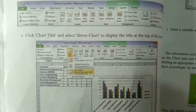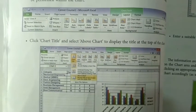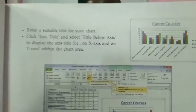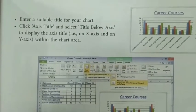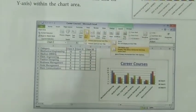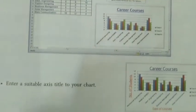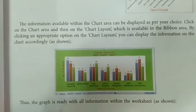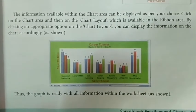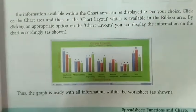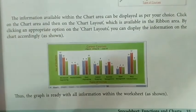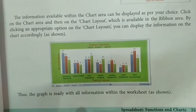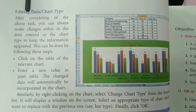After selecting the column graph, you can make further changes. To add information, click Chart Title and select 'Above Chart' to display the title at the top. Different chart types are available — select the best suitable one. According to your choice you can make changes, and in the final step the graph is ready with all information within the worksheet.